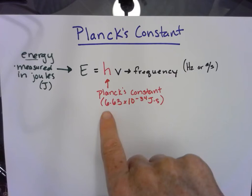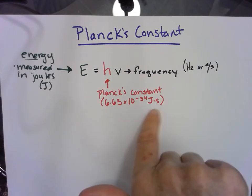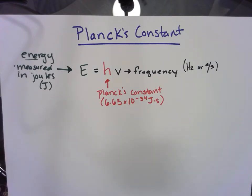The h is lowercase. That is Planck's constant. It's like the speed of light, so you're going to have to memorize this. It's not in the district packet, and it's 6.63 times 10 to the negative 34 joules times seconds.